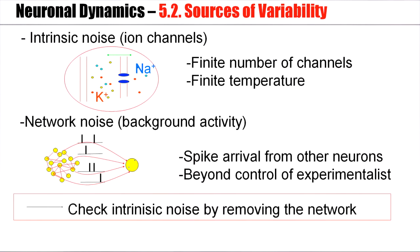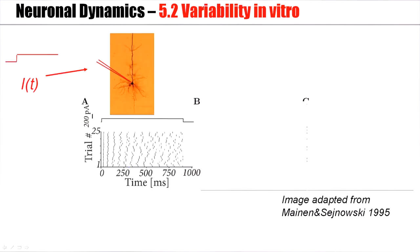Now, in order to find out whether network noise is important, the first step is to remove the network noise. And you remove the network noise by isolating a neuron, and that leads back to in vitro recordings. Suppose you inject a step current into a single neuron. Then you see that the first spike is very reliable in all the 25 trials shown here. However, later spikes are not reliable at all.